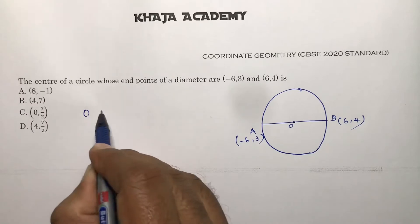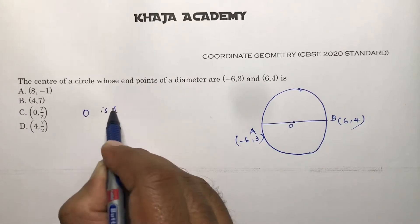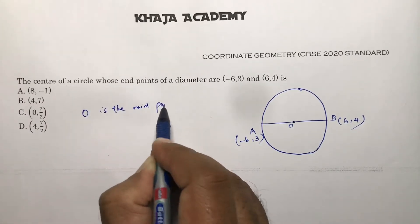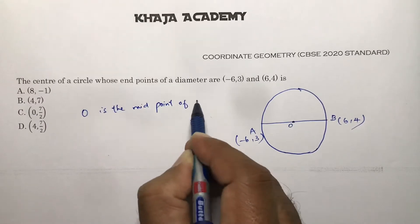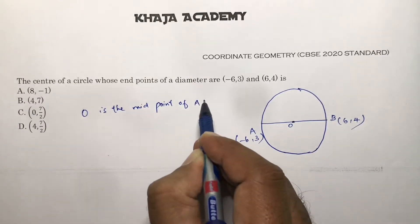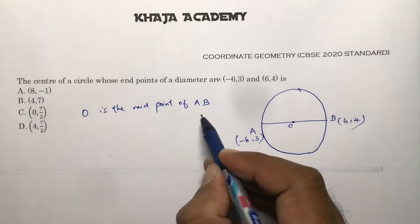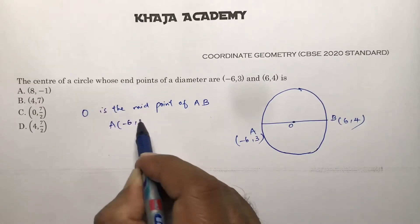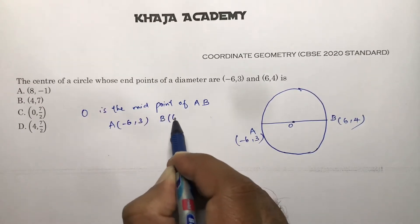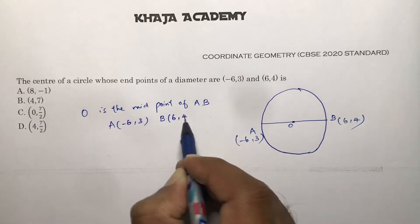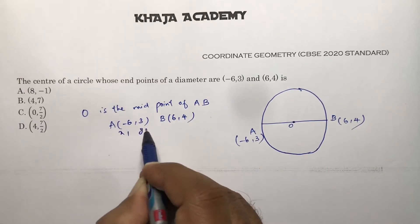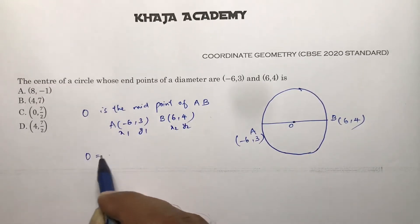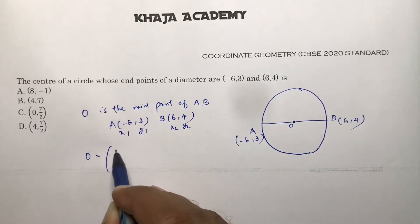The center O is the midpoint of AB. So A is (-6, 3) and B is (6, 4), giving us x1, y1, x2, y2. We use the midpoint formula to find the center.